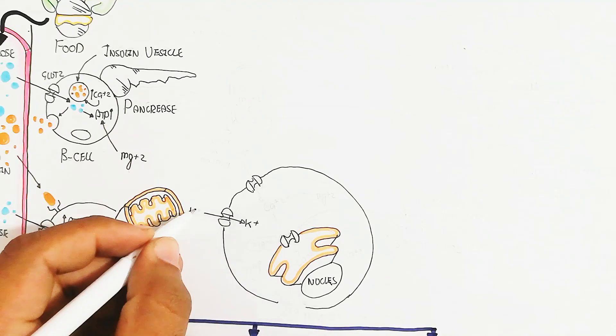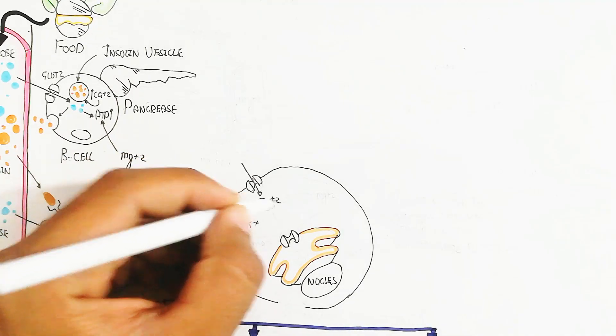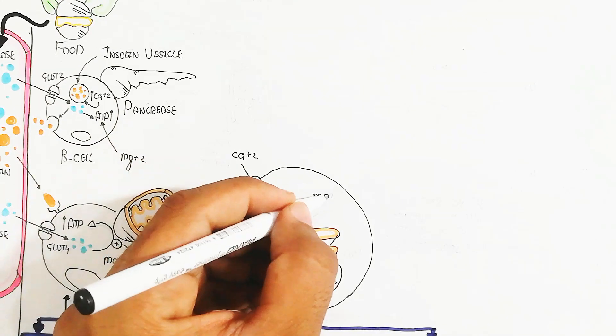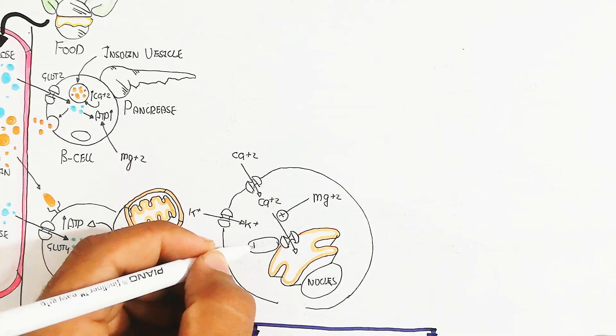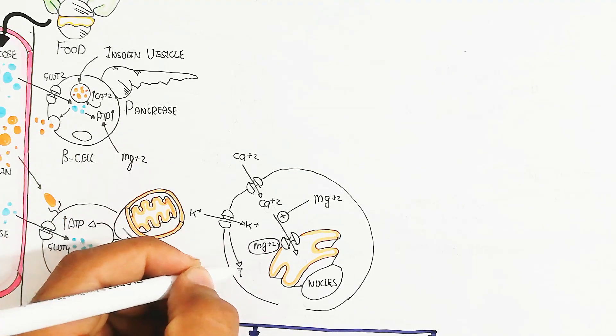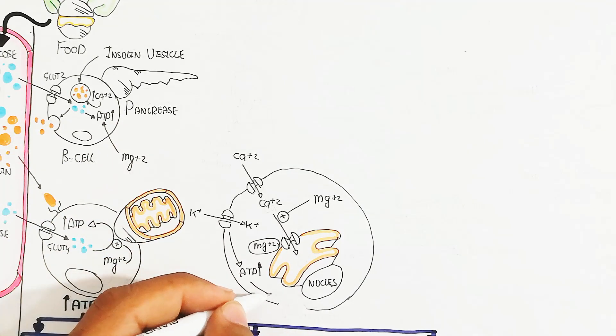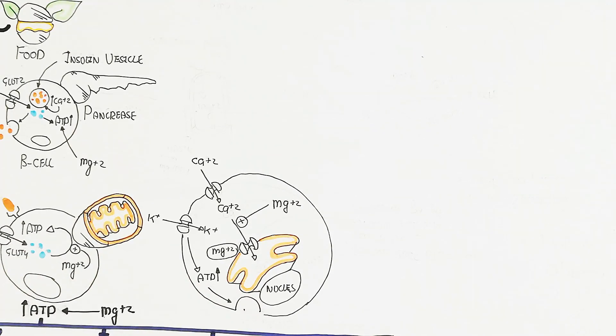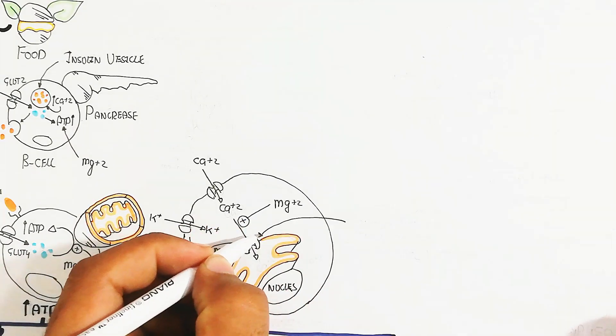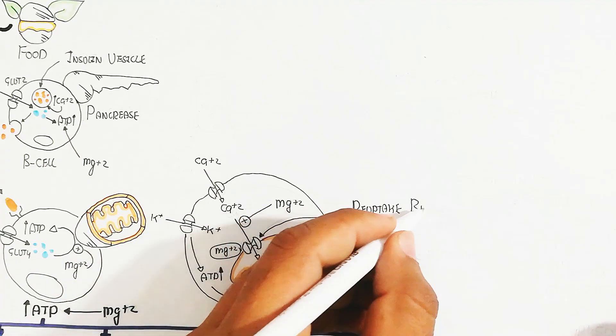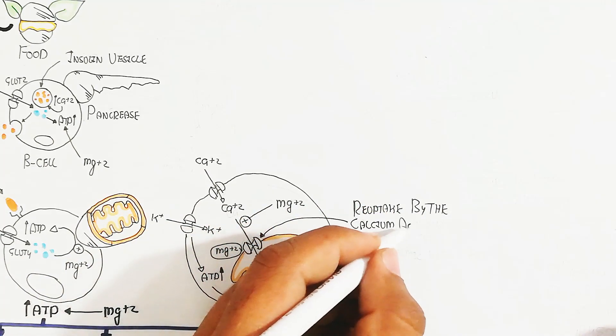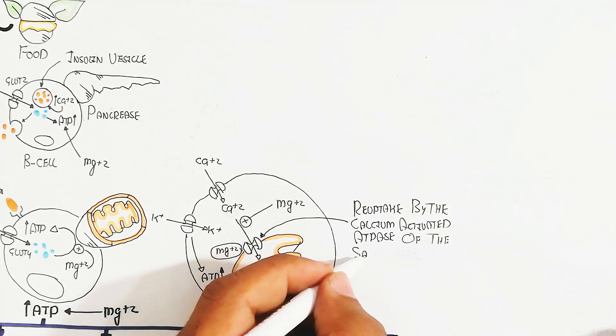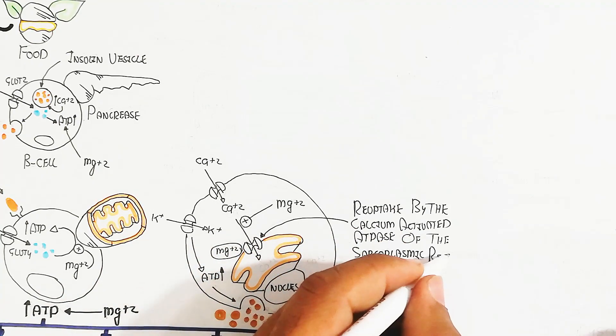When calcium moves inside and potassium triggers ATP generation more due to glucose influx, magnesium is important for moving calcium back into the endoplasmic reticulum for muscle contraction to relaxation.